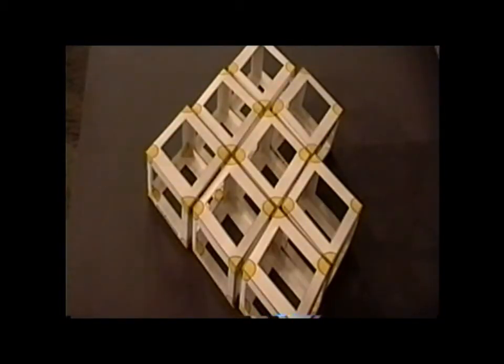Here, we have a two-dimensional array of the hexagonal lattice. For the hexagonal lattice, A equals B is not equal to C, alpha equals beta equals 90 degrees, and gamma is 120 degrees.